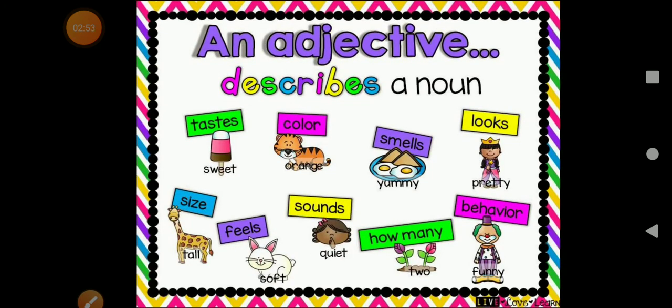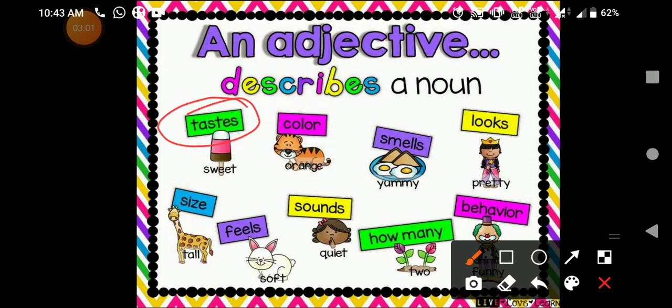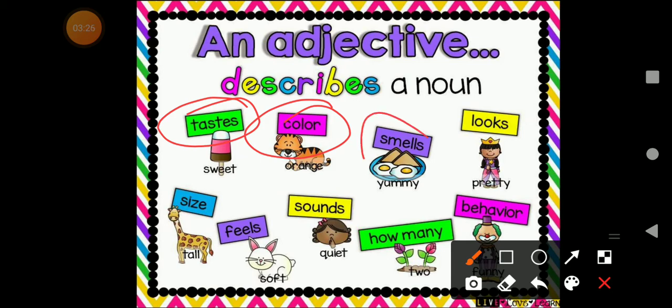Now an adjective describes a noun. What all can it describe? It can tell about the taste. If I talk about food, like chicken, cake, or ice cream, it will tell us about the taste, that it is sweet, it is juicy, it is very yummy. About the color. If we are describing the color of a noun, that word will become an adjective. Smell, it smells yummy. Looks, it is pretty, beautiful.